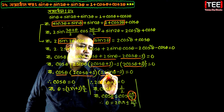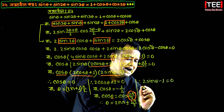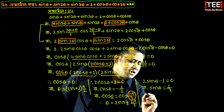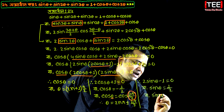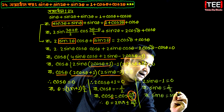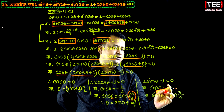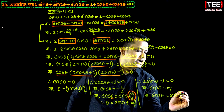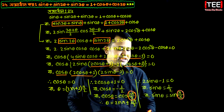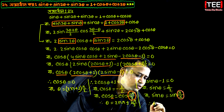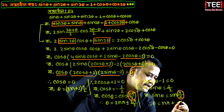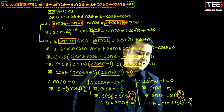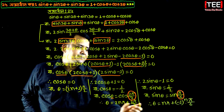We write 2 sin theta minus 1 equal to 0. 2 sin theta equal to sin pi by 6. Sin theta equal to sin alpha, so theta equal to n pi plus minus 1 to the power n into alpha.